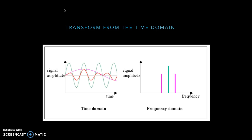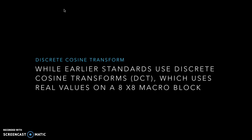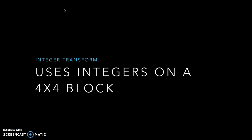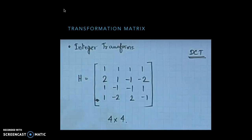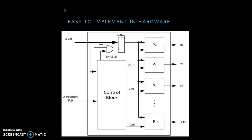It eliminates redundancy in that fashion. Earlier standards used DCT — the discrete cosine transform — which uses real values on an 8×8 macro block, and this works great. However, H.264 uses a 4×4 block and uses integers for the transformation matrix. The numbers used are 1, -1, 2, and -2. These are very simple to implement in hardware, and that's the advantage of the integer transform feature in H.264.